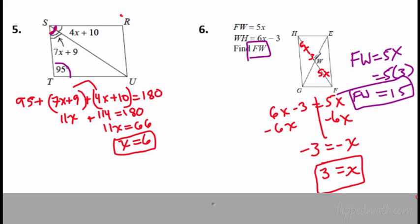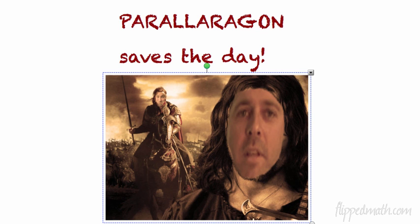For 6, we have two diagonals here. Well, one of them is bisected by, they're bisected by each other. And we get 6X minus 3 equals 5X. That is very simple. You solve it, you get X equals 3. But they want FW, so you have to plug that 3 into 5X and you get 15. Hey, you're all done. Let's see, Aragon, Paralaragon. That's who it is.